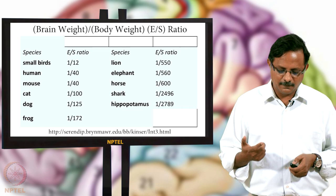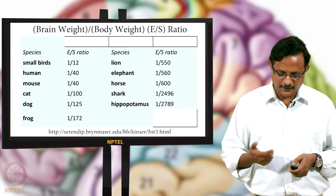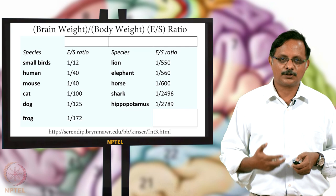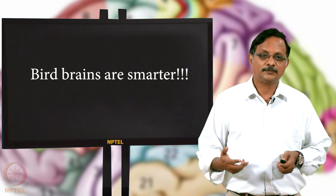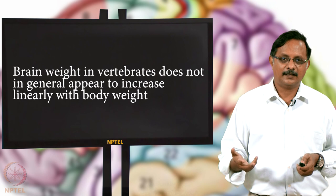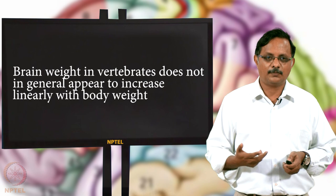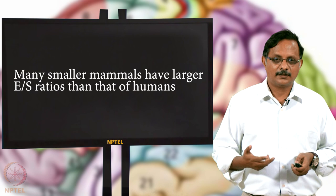Looking at E/S ratios across species: birds ~1/12, humans and mice ~1/40, cats ~1/100, dogs ~1/125, hippopotamus very small. By this measure, bird brains appear smartest, and mice are as smart as humans. Many smaller mammals have larger E/S ratios than humans, and brain weight in vertebrates does not increase linearly with body weight — so E/S ratio is not a good index of intelligence either.